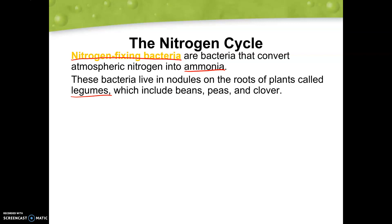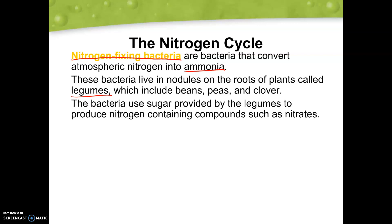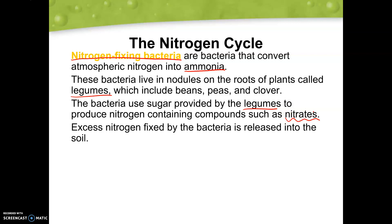Nitrogen fixing bacteria is very important because it is the only one of the three ways that we can get nitrogen directly from the atmosphere. These bacteria live in nodes on the roots of plants called legumes — including beans, peas, and clovers — because that's where they're needed to fix atmospheric nitrogen into a usable form for those plants. They use sugar provided by the legumes to produce nitrogen-containing compounds like nitrates, and the excess nitrogen fixed is released into the soil for other plants to use.